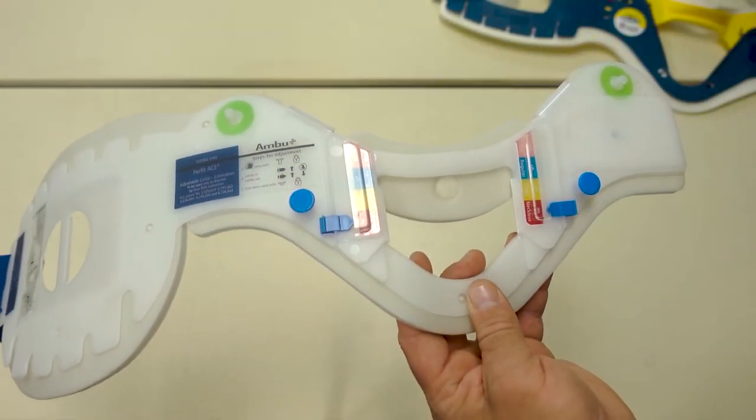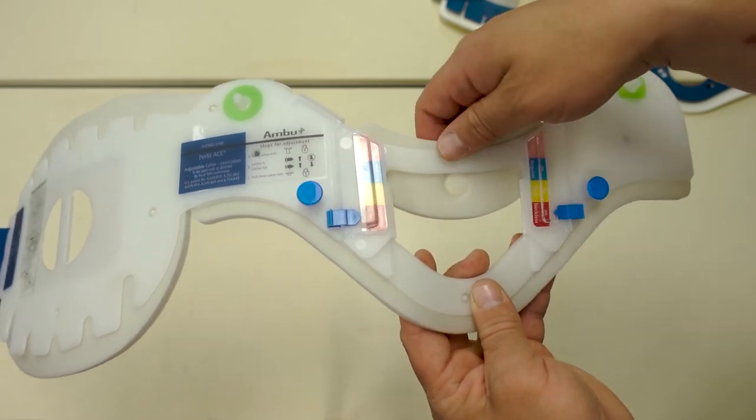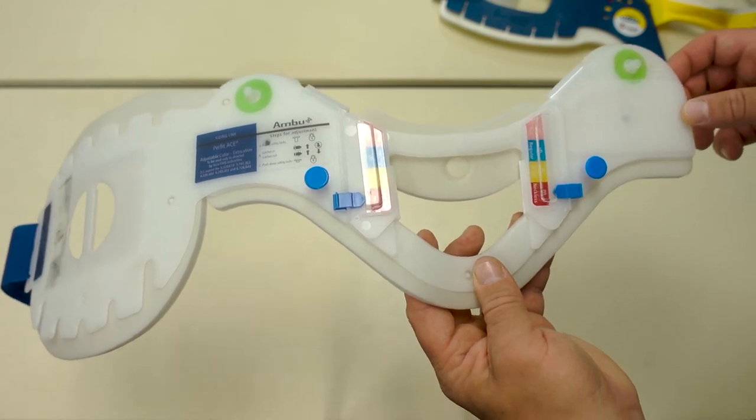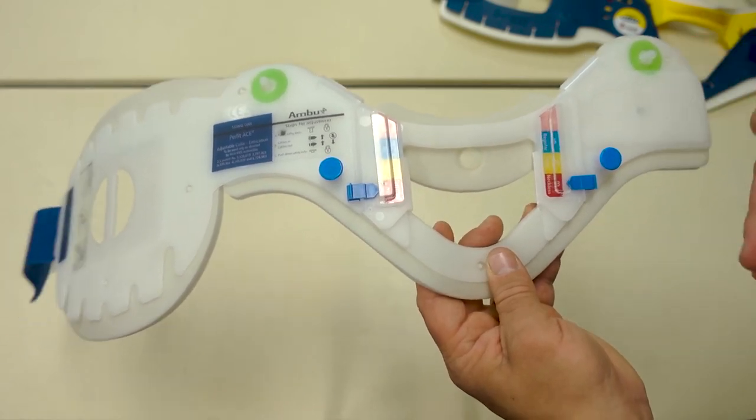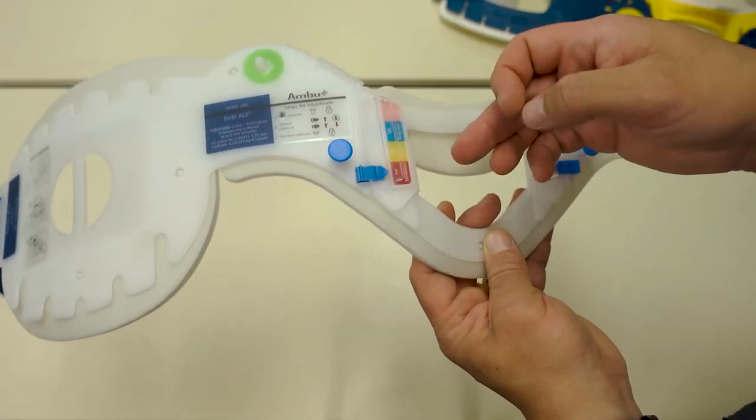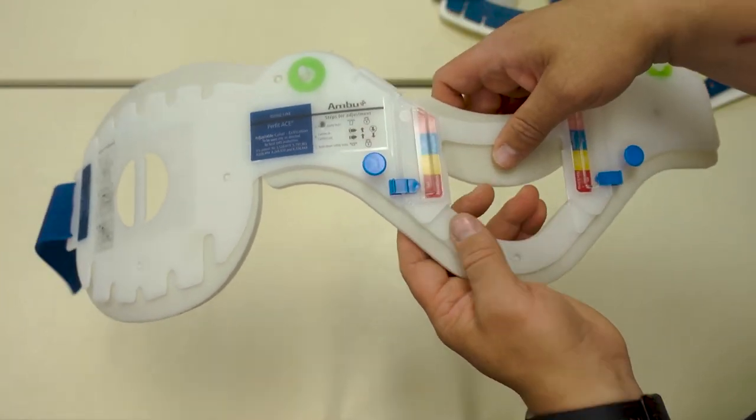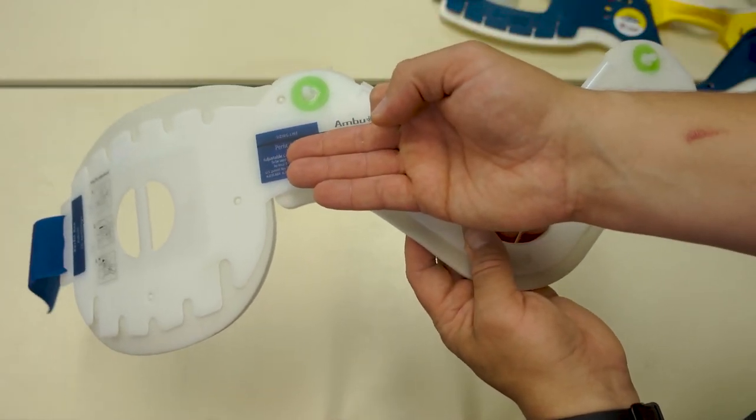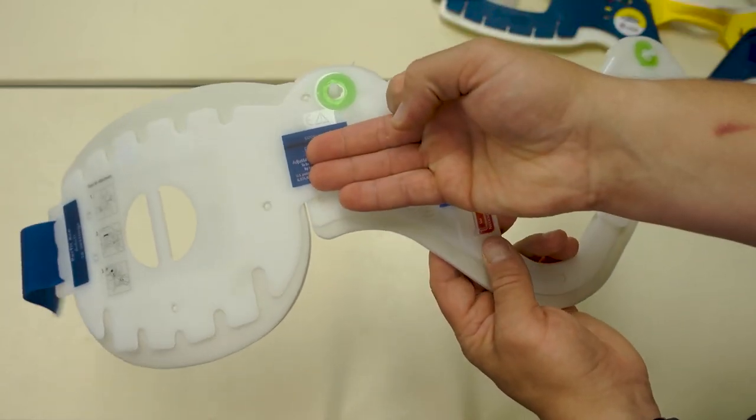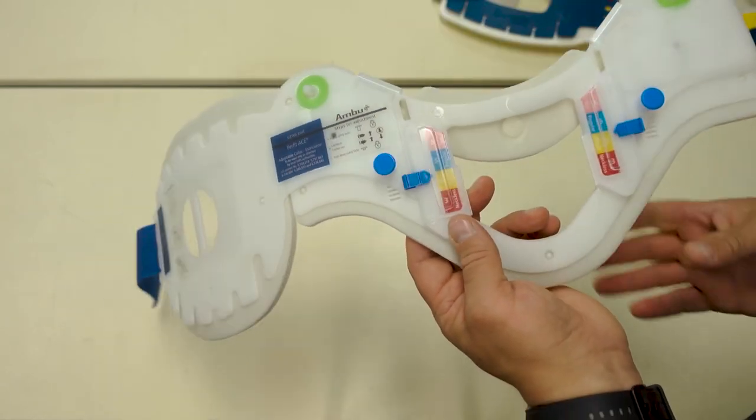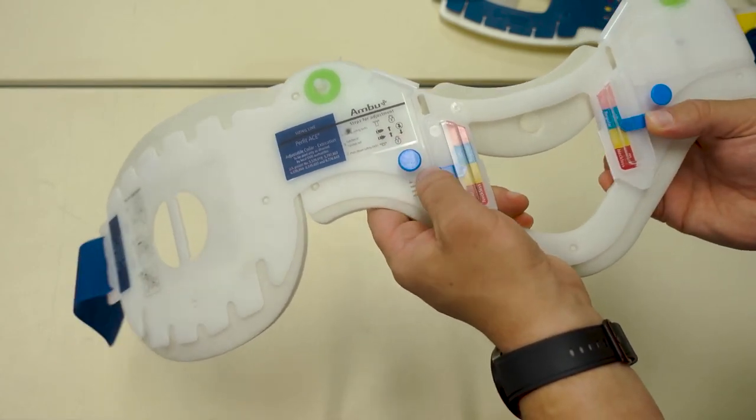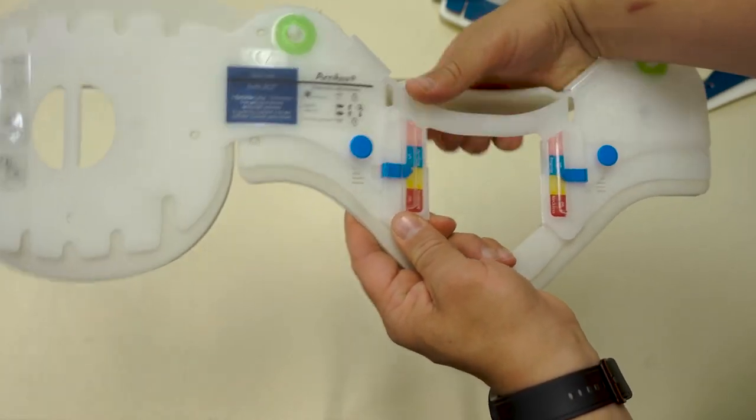The first thing you'll notice about the Ambu Perfit is that the chin piece is folded back and that there are four locks instead of two. To adjust the Ambu Perfit, take the measurement from your patient and measure from the sizing line down to the hard plastic edge. Adjust to the indicated size. Once adjusted, ensure that all four locks are applied and fold out the chin piece.